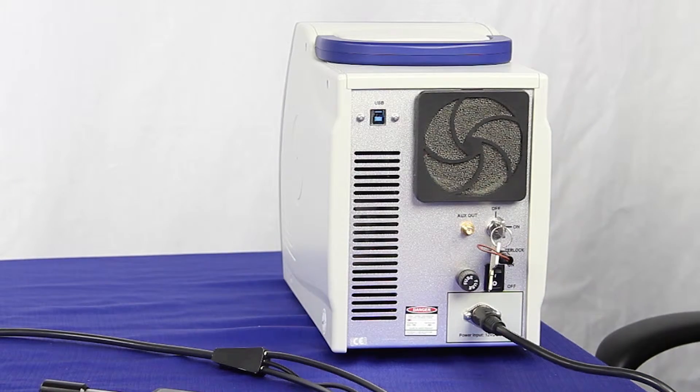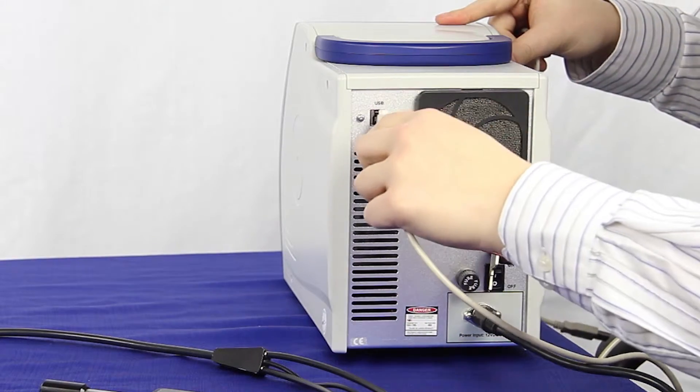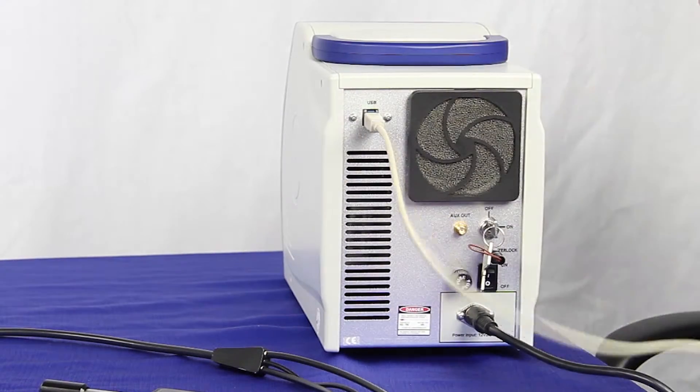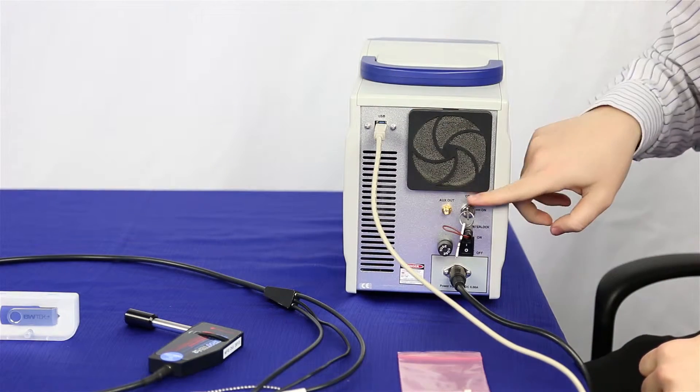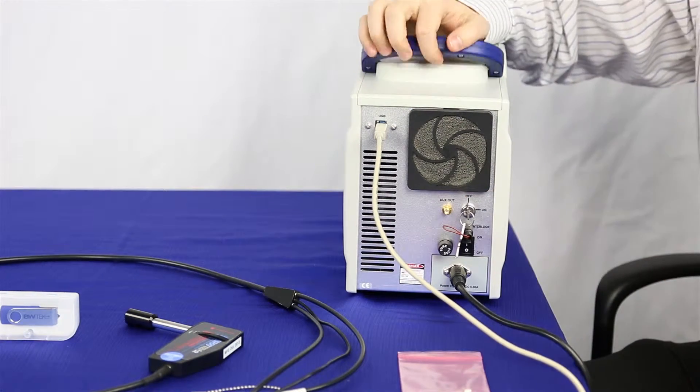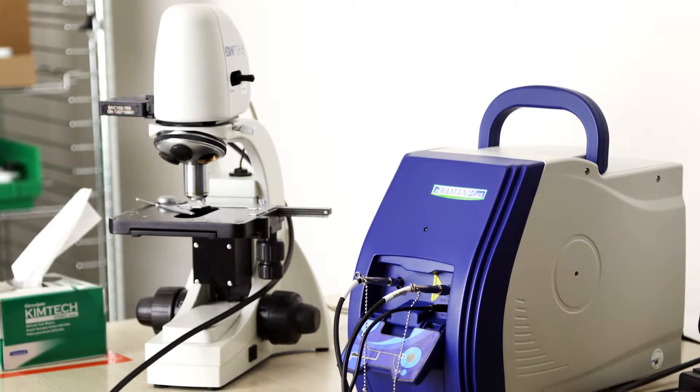You're also going to take your USB cord and plug it into the USB hole here. On the back, you'll also see there's an auxiliary port. This is for the BAC-151B microscope should you purchase one.